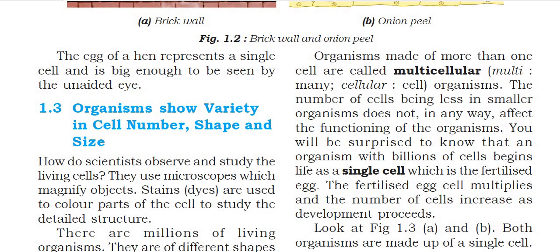The number of cells being less in smaller organisms does not in any way affect the function of the organism. For example, taking a large animal like an elephant versus a small animal like a rat — the number of cells varies, with millions and trillions in one and fewer in another, but there is no difference in their functions.